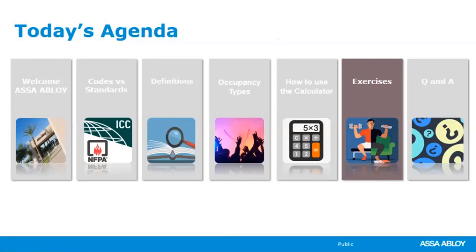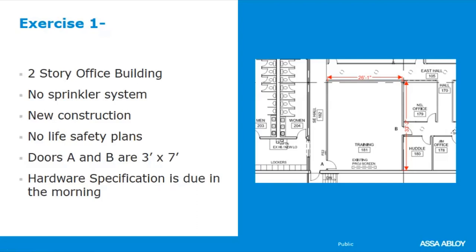Exercise one: a two-story office building, Group B business, no sprinkler system, new construction. The hardware specification is due in the morning and we want to verify whether the training room's doors A and B — three foot by seven foot — need exit devices, and whether the door swing needs to change. Rather than assume, we'll use the egress calculator to double-check.